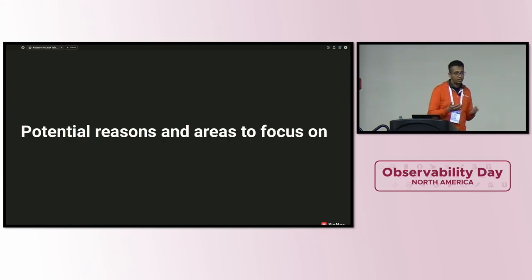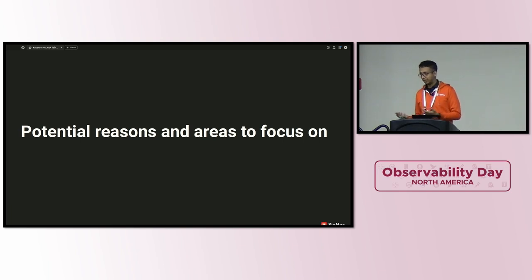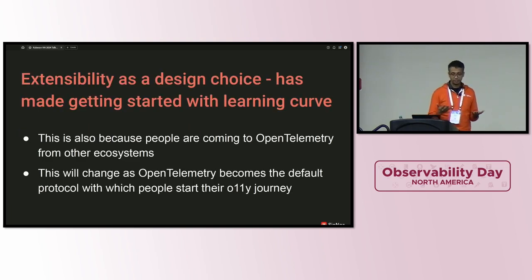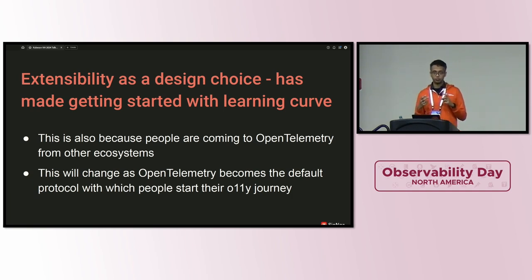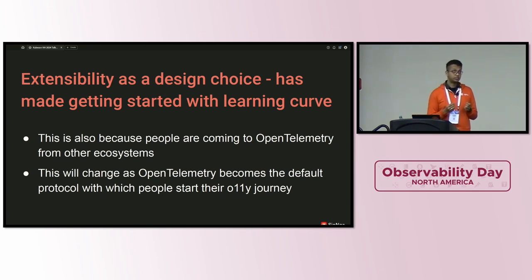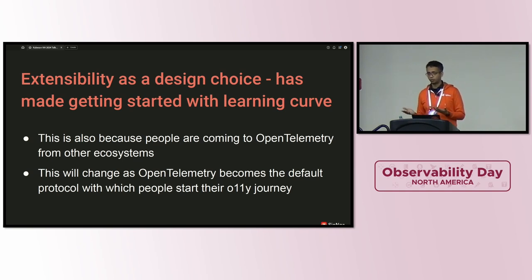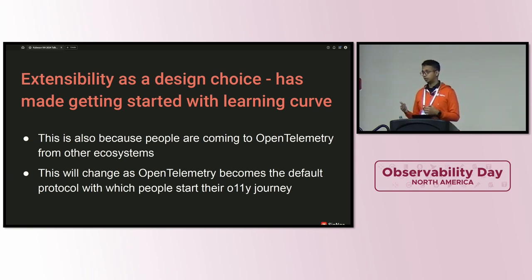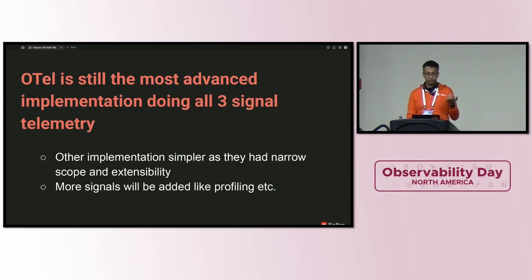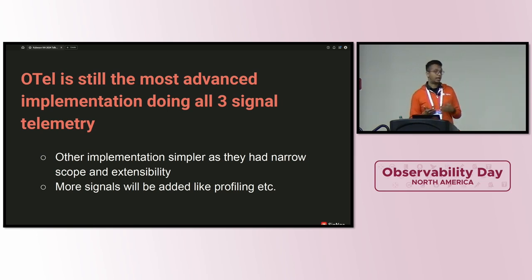These are some issues I wanted to highlight so that people who face them feel heard. But there are reasons why it is the way it is, and as members of the OpenTelemetry community we should also understand that. OpenTelemetry has taken extensibility as a design choice — the meter provider, meter, instrument model gives you a lot of flexibility on how you want to define meters and use them in your applications. Also, OpenTelemetry is still relatively new, having been around for only around three years, and this should improve as more developers start their journey with it. And just as a shout out to all the maintainers — it is still the most advanced implementation that does all three signals together. Maybe a round of applause to all the maintainers!